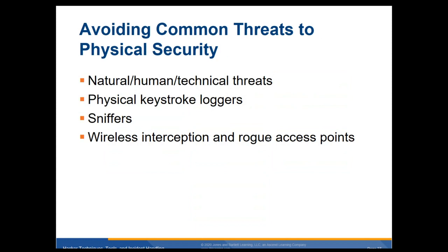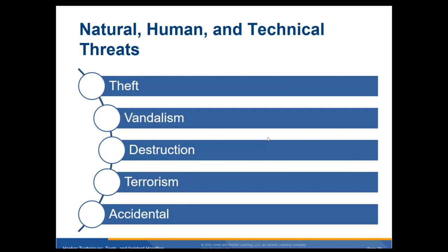Avoiding common threats to physical security — natural and human technical threats. Have antivirus, have guards, don't be built in a flood zone. Physical keystroke loggers are where you can actually have someone put a keylogger on your keyboard and record all your keystrokes. Sniffers — like Wireshark — sniff and capture packets. Wireless interception and rogue access points are where someone can actually set up a rogue access point and people start communicating through that, thinking they're talking to the right access point. Natural, human, and technical threats include theft, vandalism, destruction, terrorism — like if you're at an embassy — or accidents, like if a tree falls on your building.